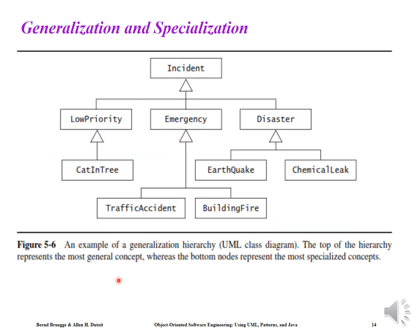In a generalization hierarchy, the top of the hierarchy represents the general concept while the bottom nodes represent the most specialized concepts. Moving from bottom to top is generalization; moving from top to bottom is specialization. For example, low priority, emergency, and disaster are all types of incidents — so the generalized class would be incident. If a new type of incident is added and placed below, that would be specialization. This concludes today's lecture.